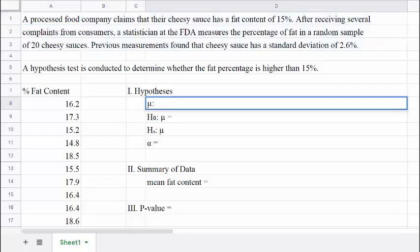We are looking at the mean fat content, so our parameter will be μ, which in this case is the mean fat content for the cheesy sauce. μ is a population mean, so this is the mean fat content for all of the cheesy sauces that the company makes, not just from the sample.